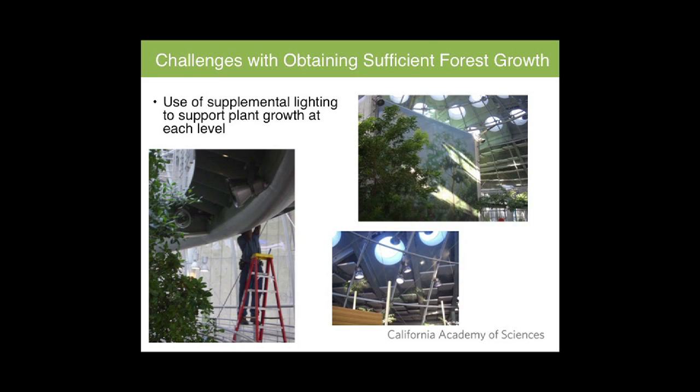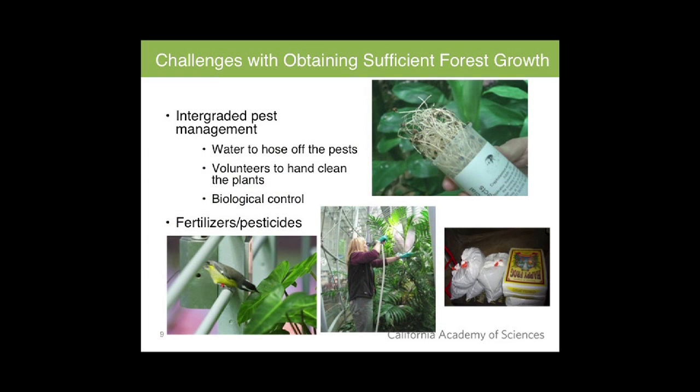Another challenge to obtaining sufficient forest growth is combating pests. We practice integrated pest management — trying to control environmental pests, not eradicate them, to maintain homeostasis within the ecology. We have two types of pests: plant pests and nuisance pests like cockroaches and ants. We use simple mechanical methods: hosing off the plants, having volunteers hand-clean plants to remove pests, and utilizing our passerines, which nip away at pests on the leaves. We also release biological control predatory insects to minimize pest levels.